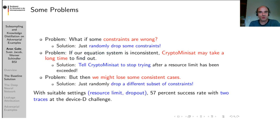There are some problems with this approach. First, if some constraints are wrong, we solve this by randomly dropping some constraints. Second, if our equation system is inconsistent, the SAT solver may take a long time to find out — we solve this by imposing a resource limit on CryptoMiniSAT so it stops trying after a fairly short time. This means we don't waste a lot of time on inconsistent constraint systems, but we might lose some consistent cases, which is solved by just trying again. With suitable settings on the resource limit and the dropout, we achieve roughly 57% success rates given two traces at the unknown device challenge with the linear baseline solution.